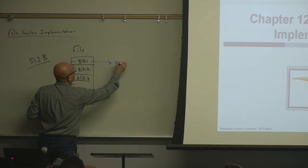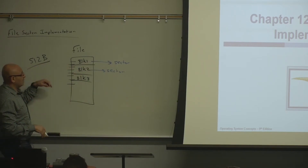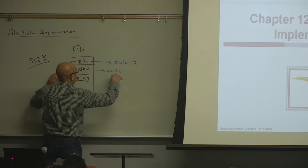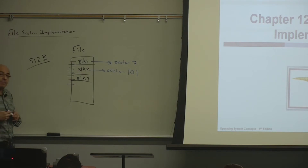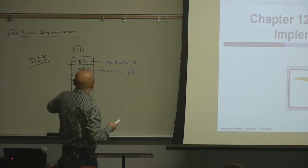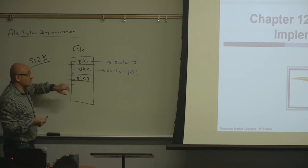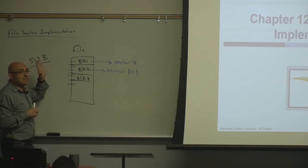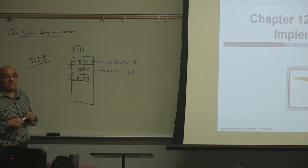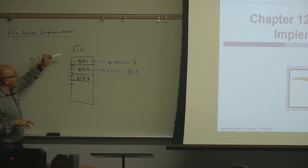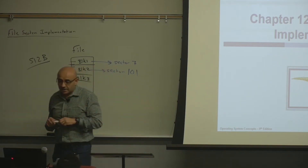So a block could get mapped into, say, sector 7, and another block could get mapped into sector 101. Just like memory management, logically the file is a contiguous sequence of blocks, but physically on the disk these blocks can be scattered all over — they don't have to be contiguous or in order. Mapping blocks into sectors is just like mapping pages into frames in memory management.